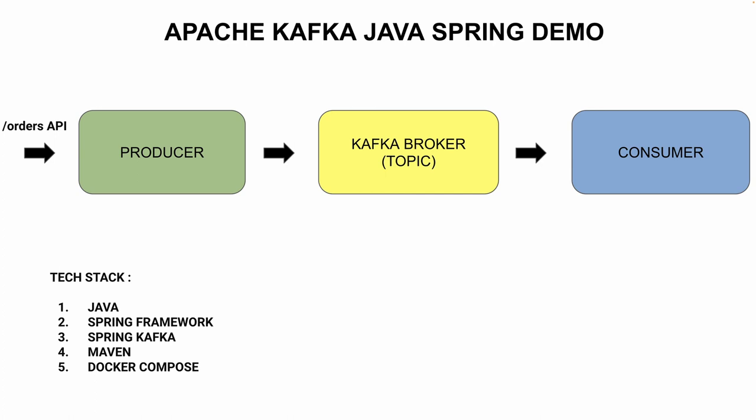You can publish to the order topic. The two producers and consumers are part of one Java Spring application. If you publish the product, the consumer can pull it.